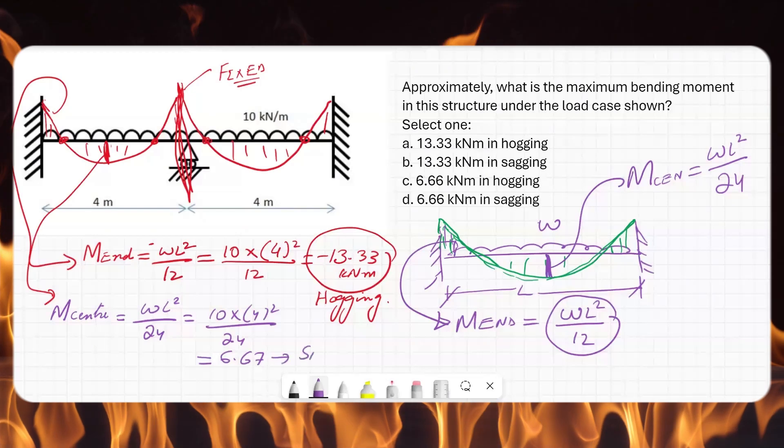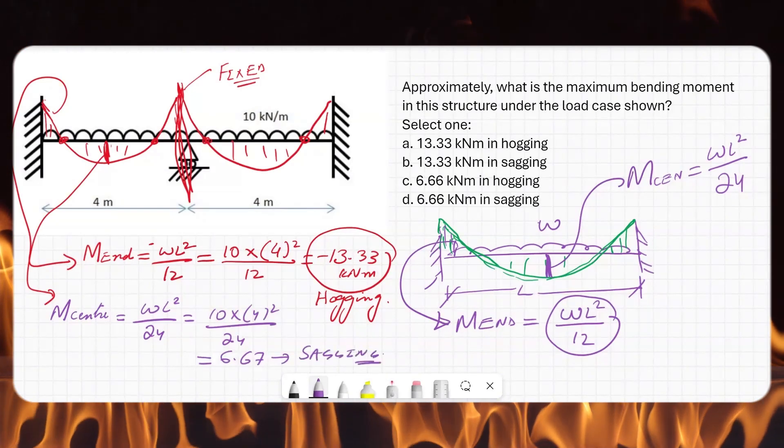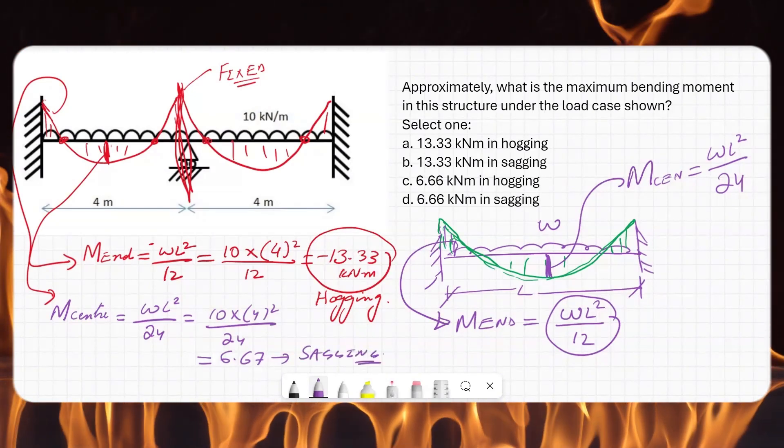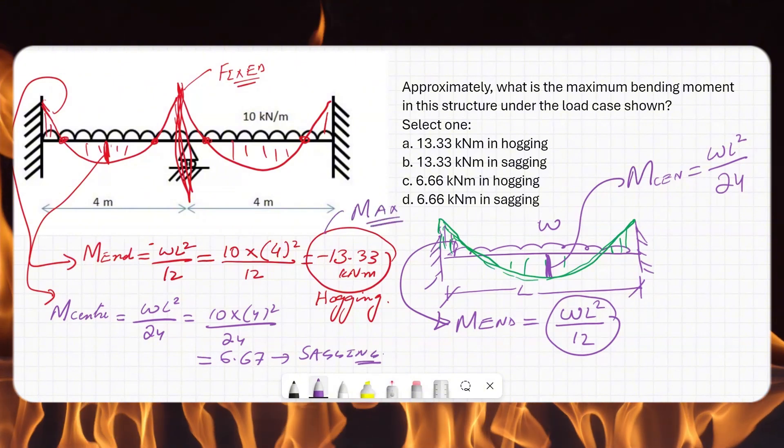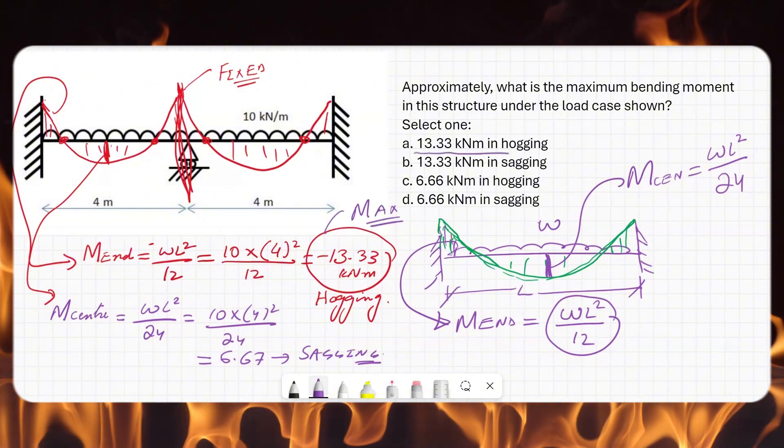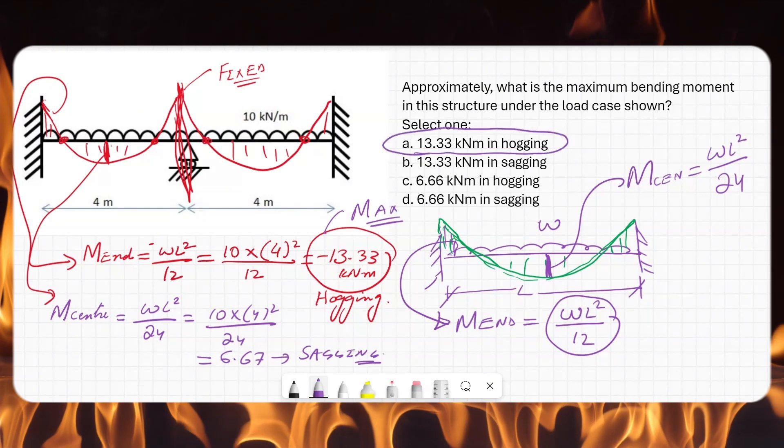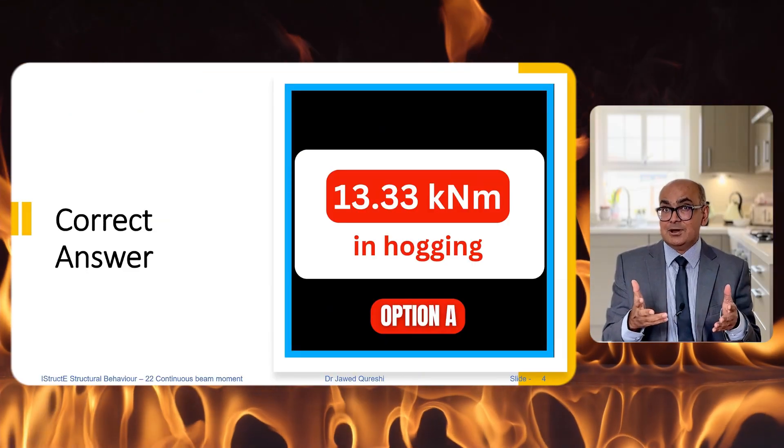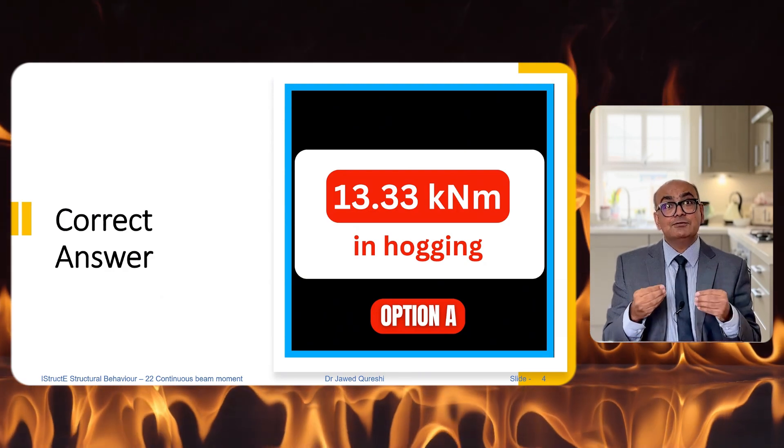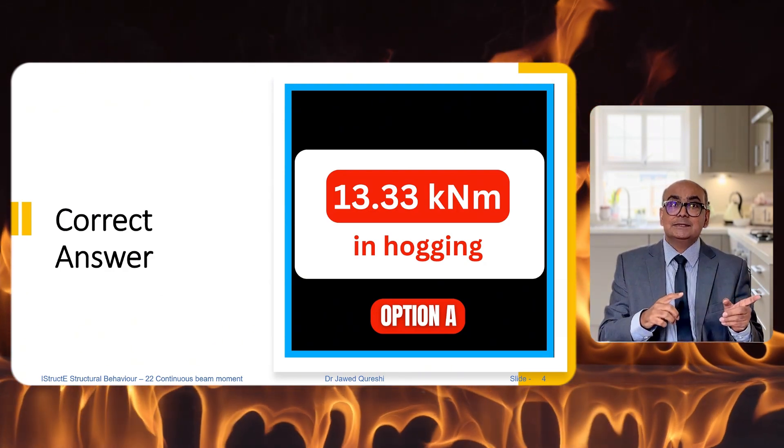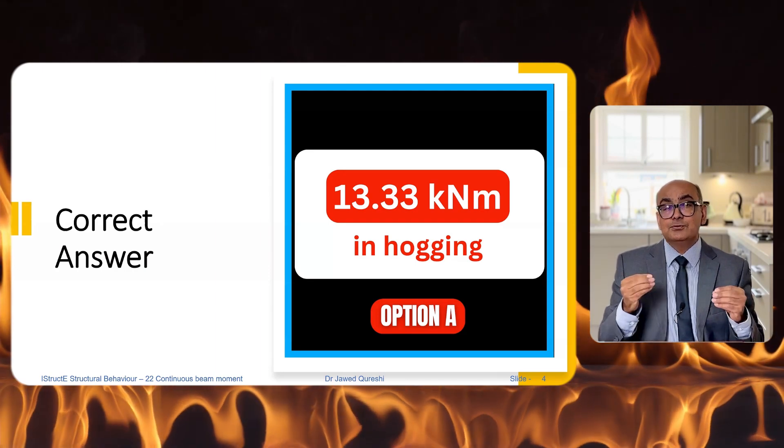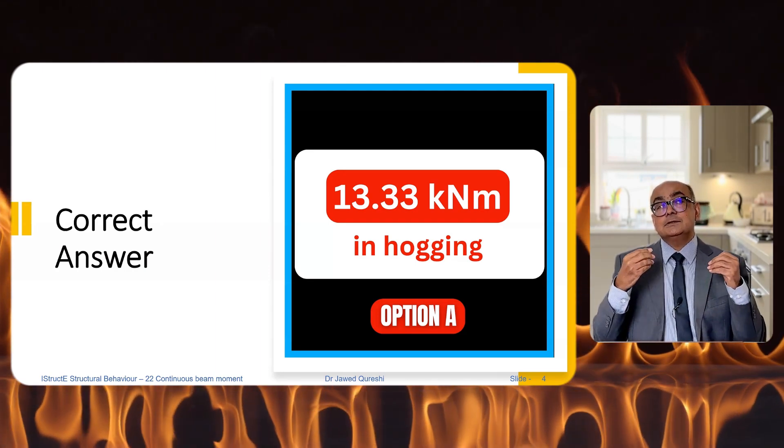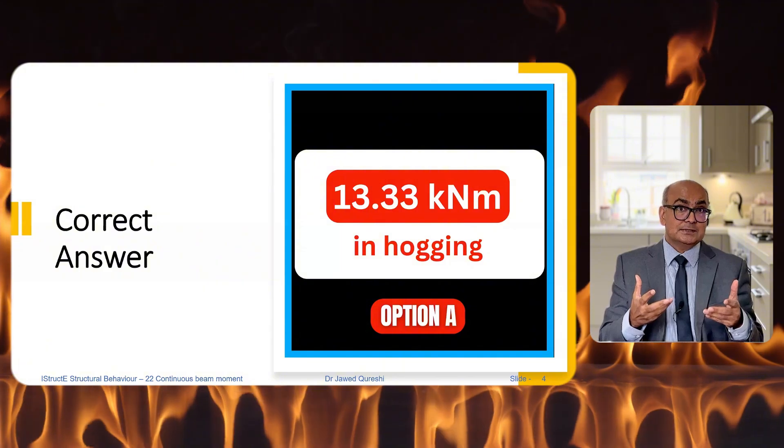So the maximum bending moment will be equal to 13.33 in hogging, and option A is the correct option. Now tell me, did you get it right? Don't worry if you didn't—you can always watch back this tutorial to improve your knowledge and to improve your basic structural engineering skills.